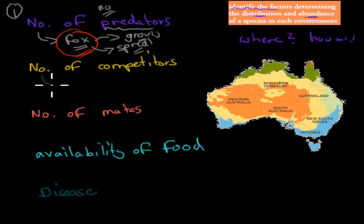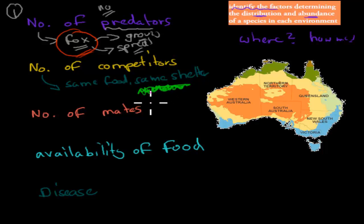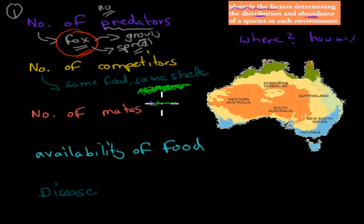Number of competitors is different from predators. Competitors are those looking for the same food or same shelter — not necessarily trying to kill you, but competing for the same resources. In a rainforest, there is very little light because tall trees take it away from the bottom, so there's lots of competition for light. Only the fittest survive — if you can't get sun, you will die out. The more competitors you have, the less abundance and the less distribution of that species.